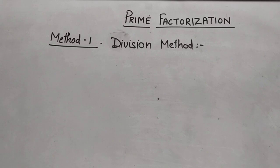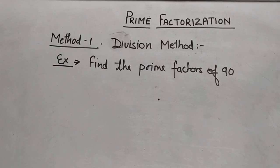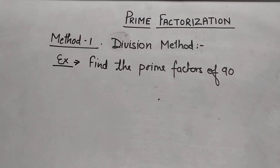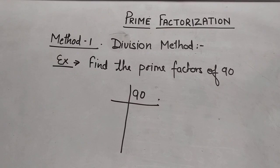First method: division method, sometimes called the continuous division method. Let us understand this method by one example — find the prime factors of 90. To express 90 as a product of its prime factors, we have to begin with the smallest prime number that divides 90 exactly. The smallest prime number is 2, and since 90 is an even number, it is divisible by 2.